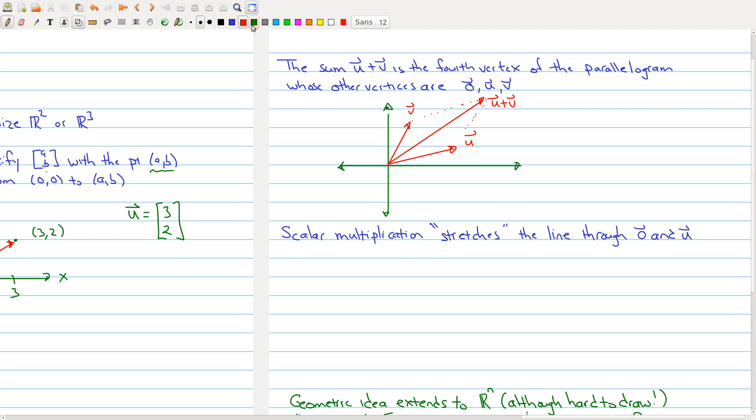Similarly, when we look at scalar multiplication, there's a geometric interpretation as well. In this case, scalar multiplication corresponds to stretching a vector through the line, through stretching a vector from the origin to the point, and stretching that line either further out or further in. So let's make this a little bit clearer with an example.